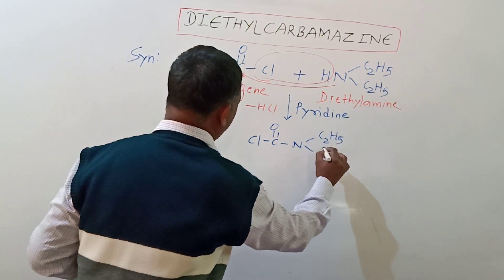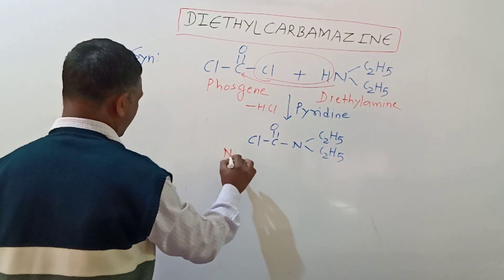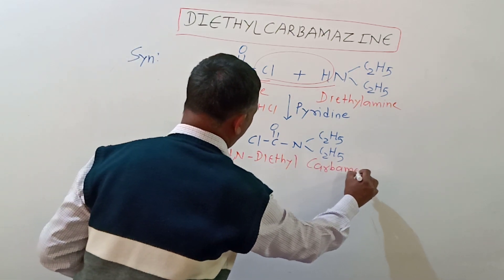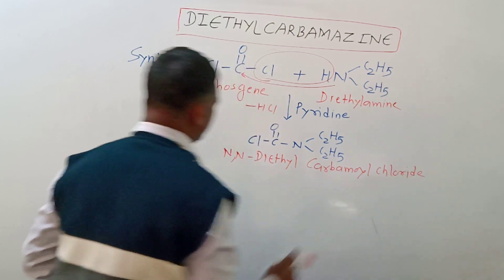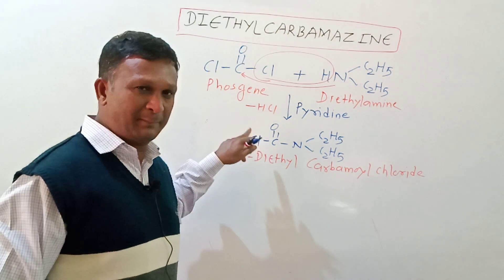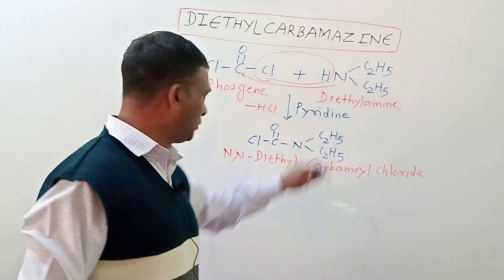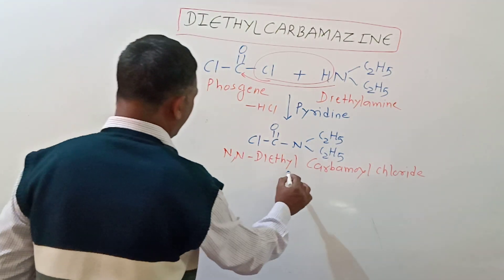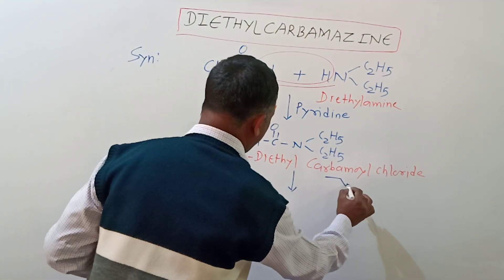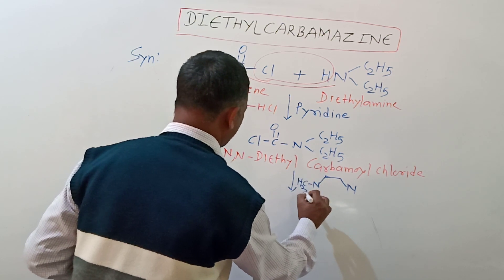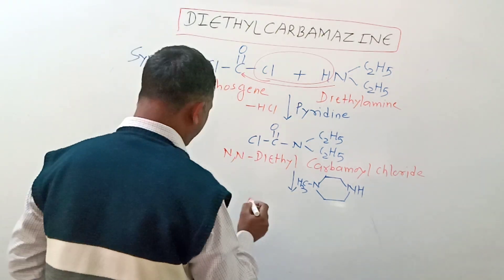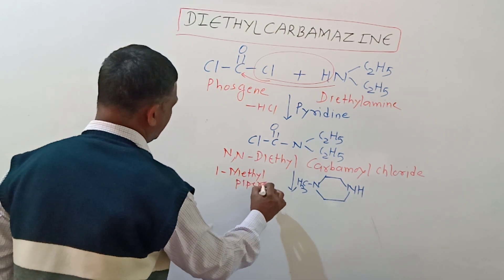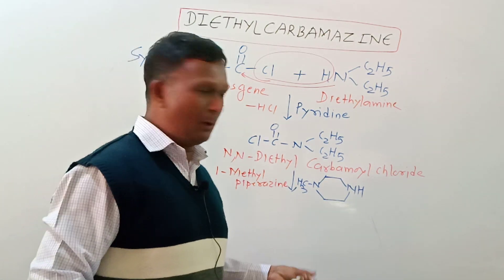This intermediate is called NN diethyl carbamoyl chloride. The N-C(O)-Cl group is called a carbamoyl chloride, and on the nitrogen we have two ethyl groups, so we call it NN diethyl carbamoyl chloride. This then reacts with a piperazine derivative which is called 1-methyl piperazine.